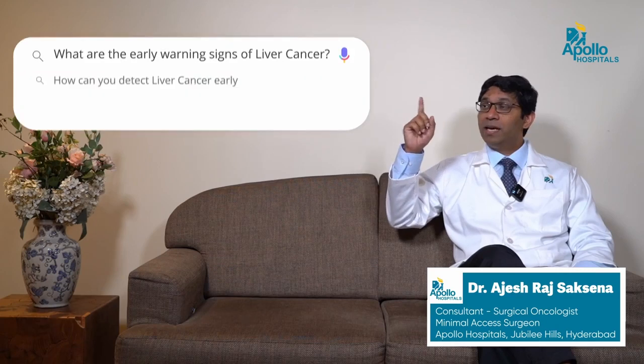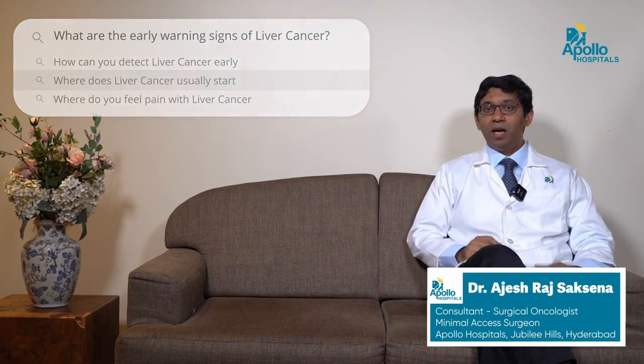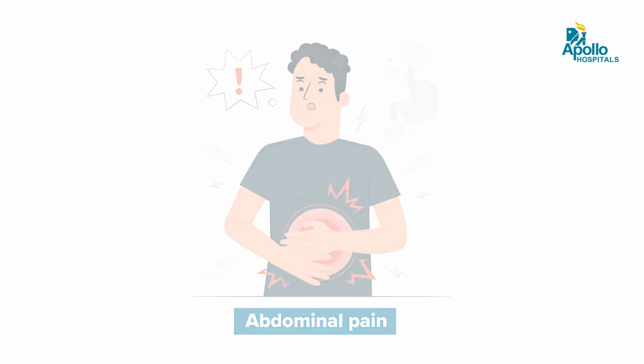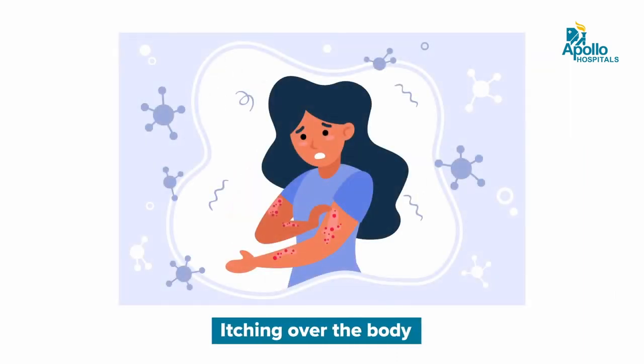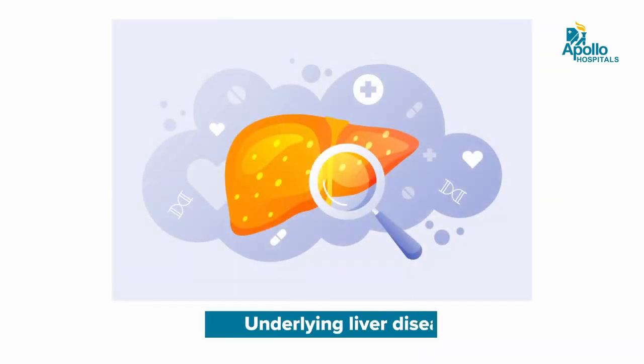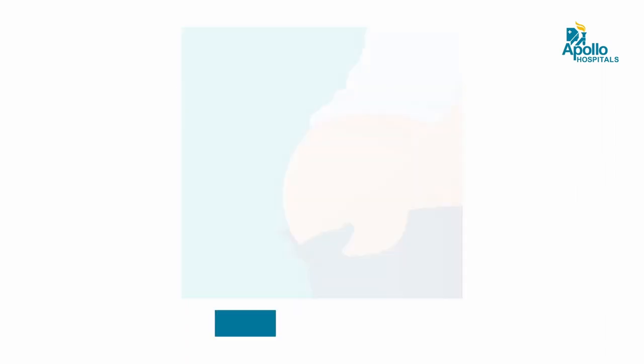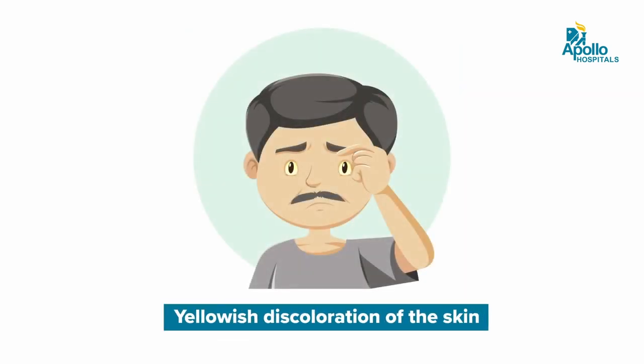What are the early warning signs of liver cancer? Unfortunately, most liver cancers when they are early may not cause any symptoms at all. Most people may come with vague complaints of pain in the right upper abdomen, itching over the body, or features of an underlying liver failure — swelling over both legs, fluid in the abdomen, or yellowish discoloration of the skin and eyes.